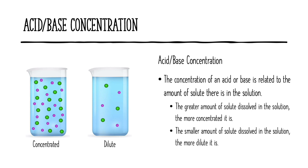Acid-base concentration is really just related to the amount of solute in that solution — the amount of the acid or base that's dissolved in the water. The greater the amount of solute dissolved, the more concentrated it is. Looking at that first beaker, you can see a lot of dissolved particles, so we say that is a more concentrated solution. The smaller the amount of solute dissolved, the more dilute it is, as seen in the second beaker with fewer particles per unit of volume.